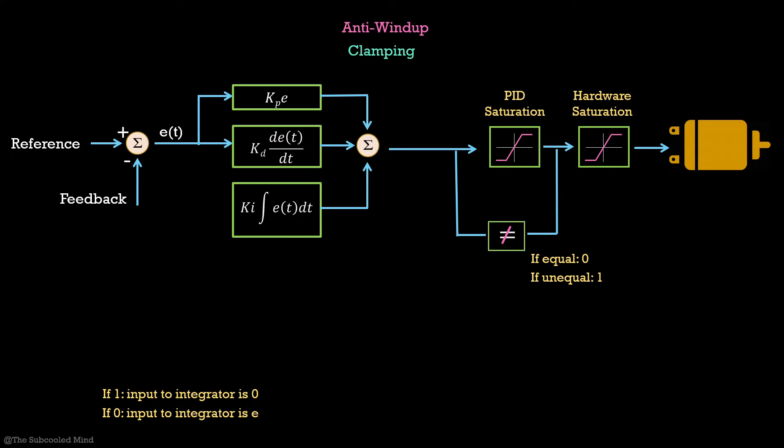But there is one more condition. Let us say that the PID controller is saturated but it is actually trying to decrease output, or in other words, it is trying to come out of saturation. At that moment, you do not want to stop the integrator. Hence we add another if condition to account for this.